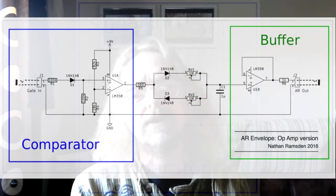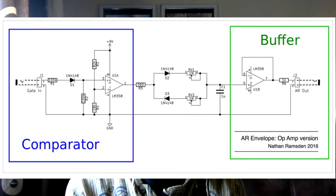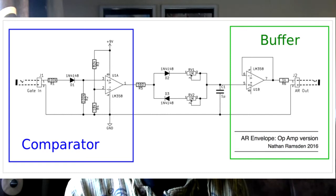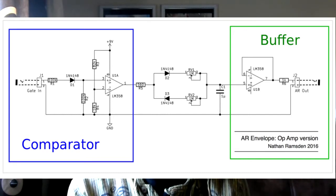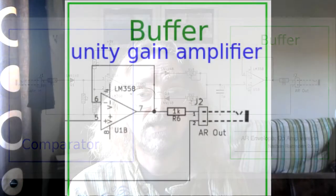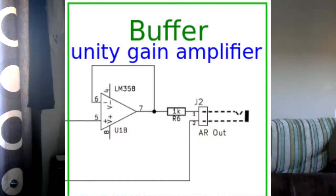If we jump to the other end of the circuit and look at the output, this is the other part of the dual op amp and it is simply a buffer circuit. The output is connected back into the negative input.